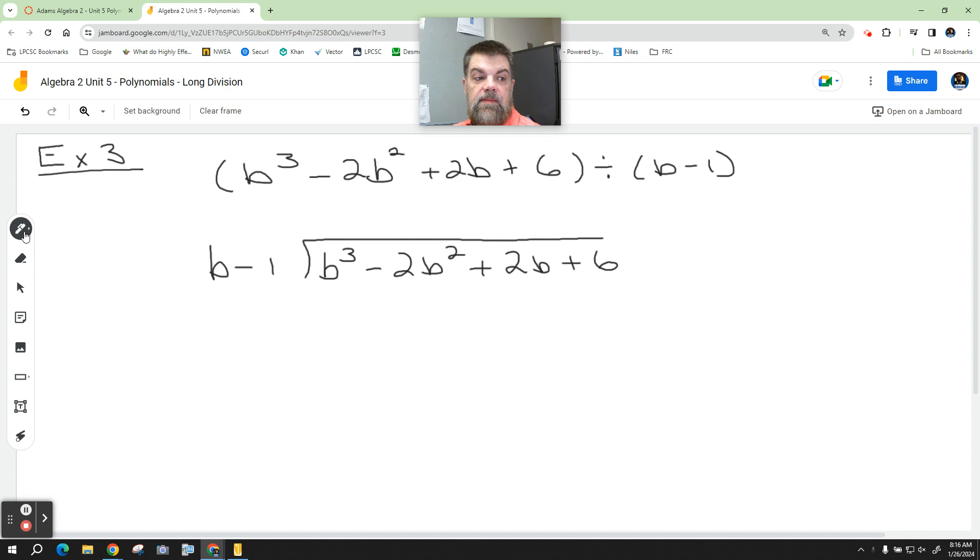Now, I'm going to rewrite this a little different. You don't have to use different colors. I'm going to use different colors so you can see what I'm multiplying by what. So I'm going to say b minus 1.